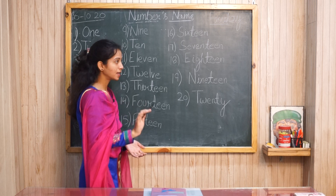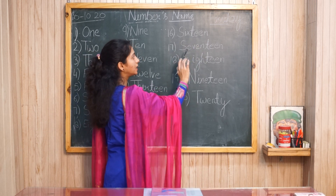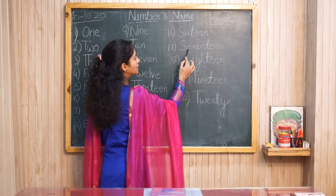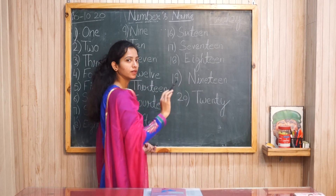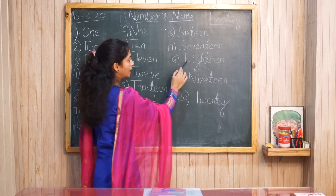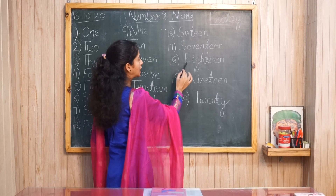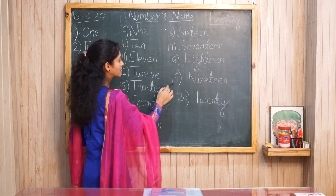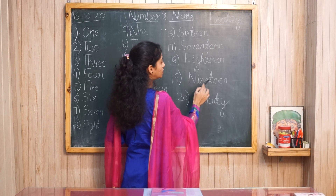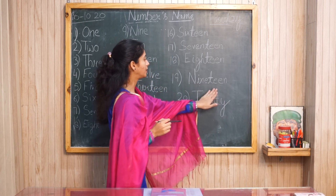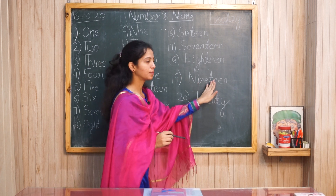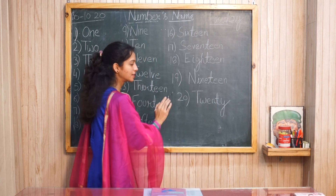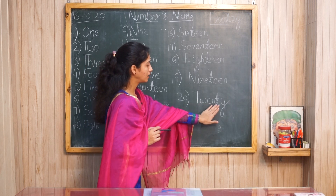16: S-I-X-T-double-E-N. For 17, first write seven's spelling then teen: S-E-V-E-N-T-double-E-N. For 18: E-I-G-H-T then double-E-N — Eighteen. For 19: N-I-N-E-T-double-E-N — first nine's spelling then teen. Twenty: T-W-E-N-T-Y.